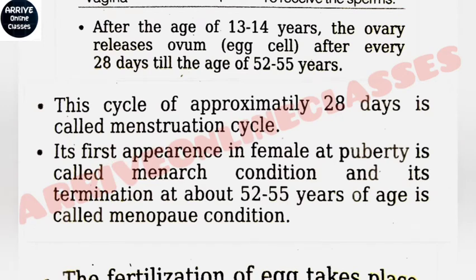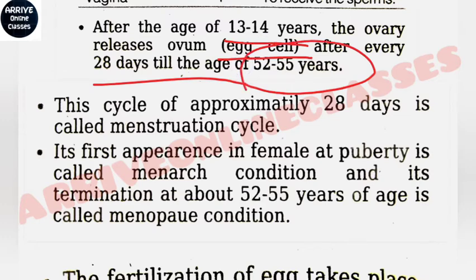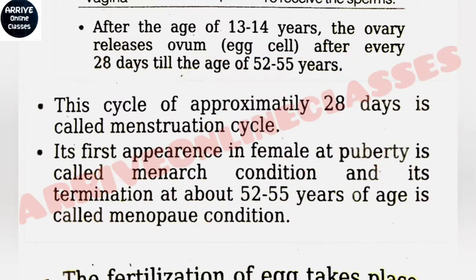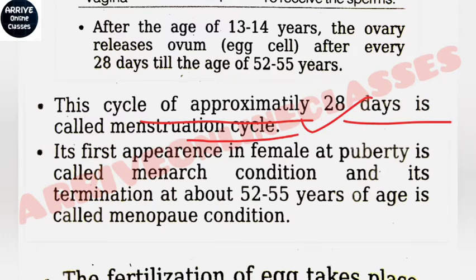After the age of 13 to 14 years, the ovary releases an ovum — that is, the egg cell — approximately every 28 days. This continues until about age 45 to 50, though some books cite 52 to 55. We call this the menstrual cycle, which is a monthly cycle in the female. The first appearance of the menstrual cycle at puberty is called menarche, and when the menstrual cycle stops in females, it is called menopause.